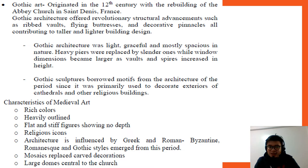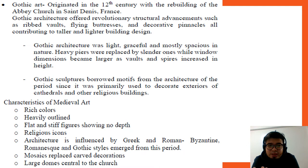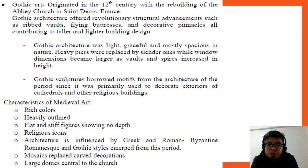Gothic architecture is light, graceful, and mostly spacious in nature. Heavy piers were replaced by slender ones, while window dimensions became larger as walls and spires increased in height. Gothic sculpture borrowed motifs from the architecture of the period, primarily used to decorate exteriors of cathedrals and other religious buildings.